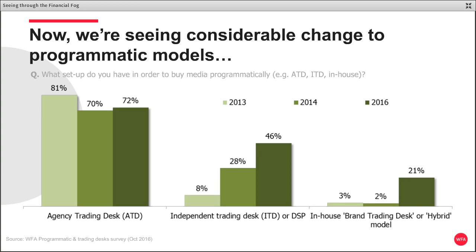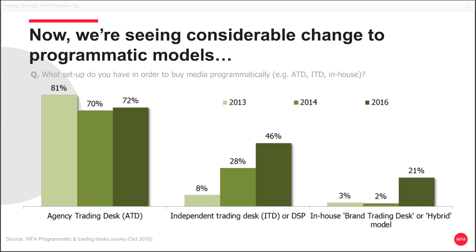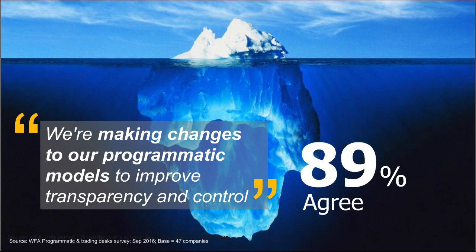Agency trading desks in 2013 were used by 81% of our members. That's still the most popular model, but it's not hard to spot the trend in terms of the increase in independent trading desks and brand trading desks or hybrids, which only four years ago were really fringe approaches on the margins. Perhaps most recently, nine in ten of our members — from the 47 companies that took part in this study — are currently reviewing their programmatic models based on the need to improve transparency and control.